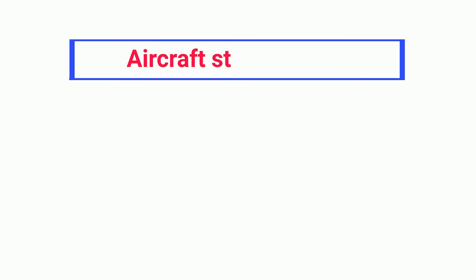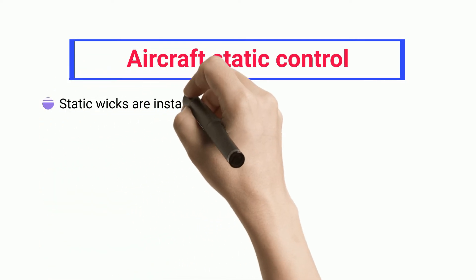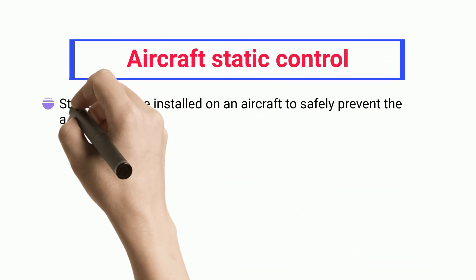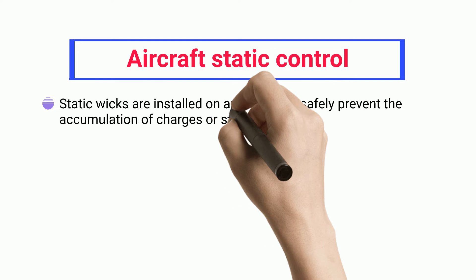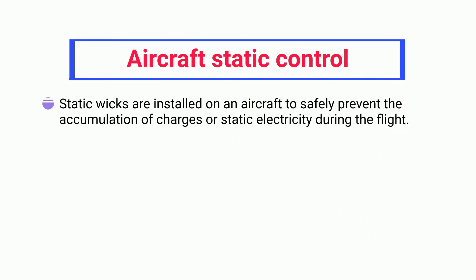Static wicks are installed on an aircraft to safely prevent the accumulation of charges or static electricity during flight.